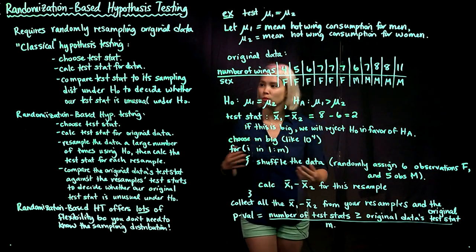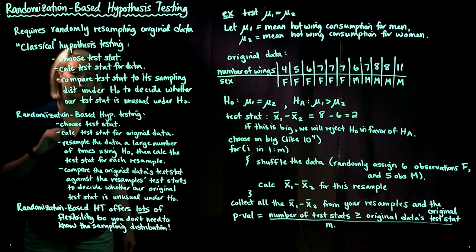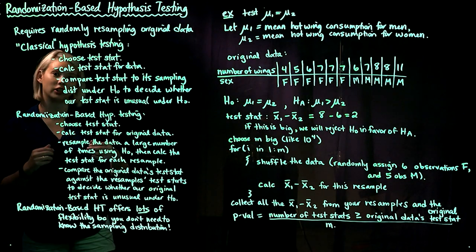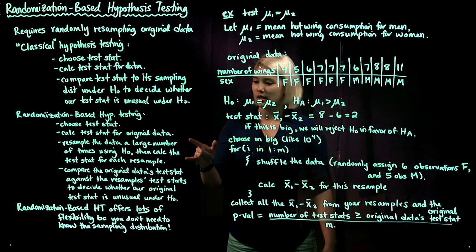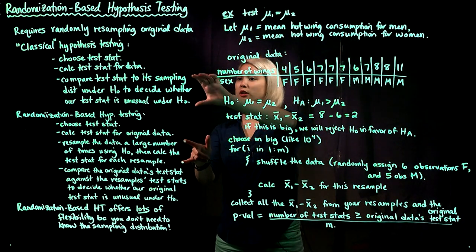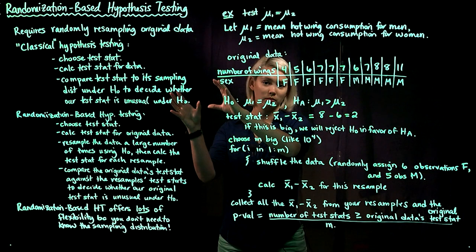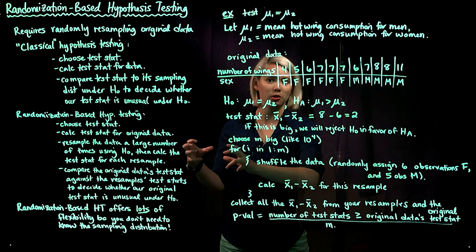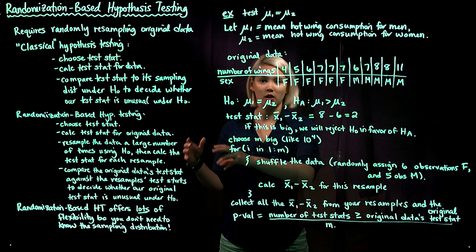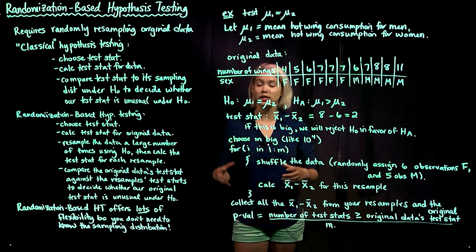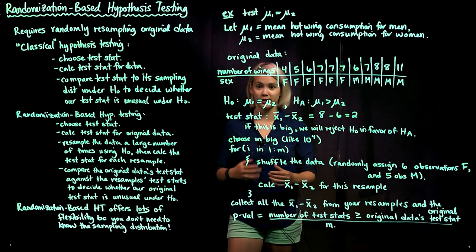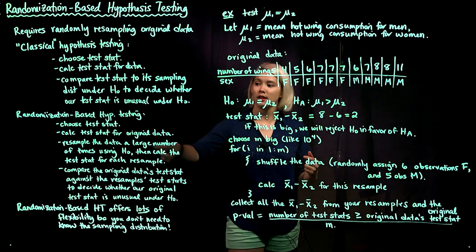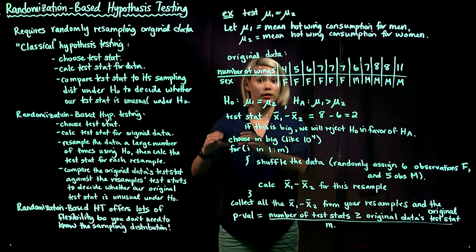So what are the steps? The first step is the same as usual: we choose our test statistic and calculate it for our original data set. Now, instead of comparing our test statistic to some known sampling distribution like a normal or t, we're going to create our sampling distribution under the null hypothesis. We resample the data a very large number of times, and for each resample we calculate that test statistic.